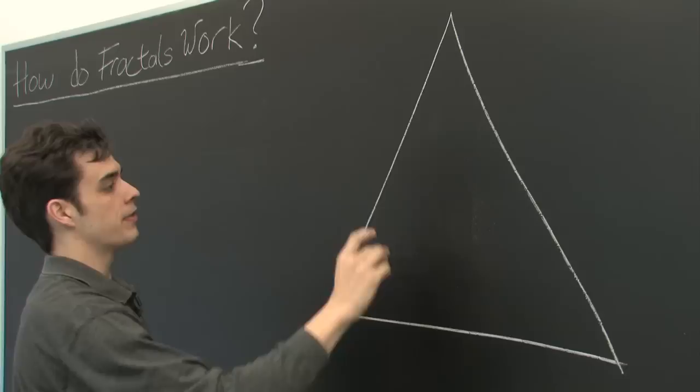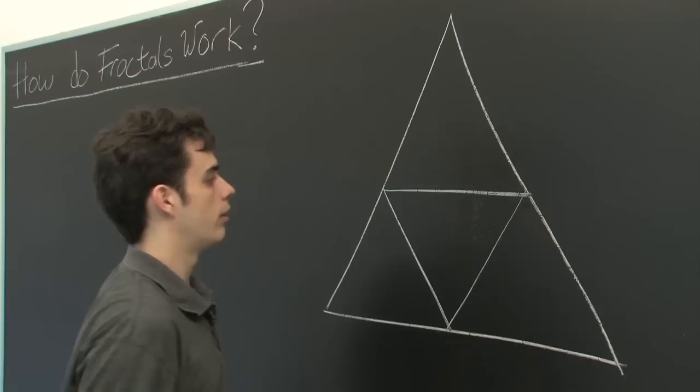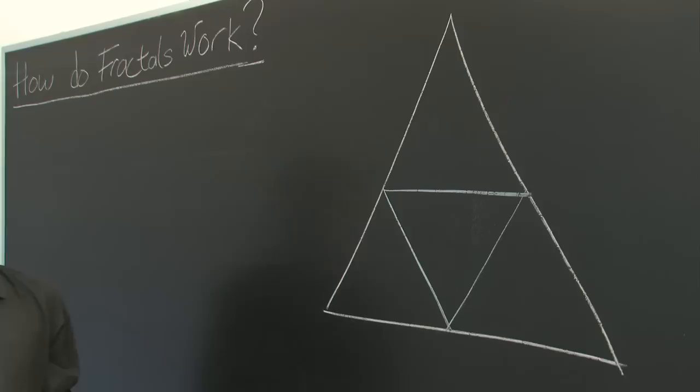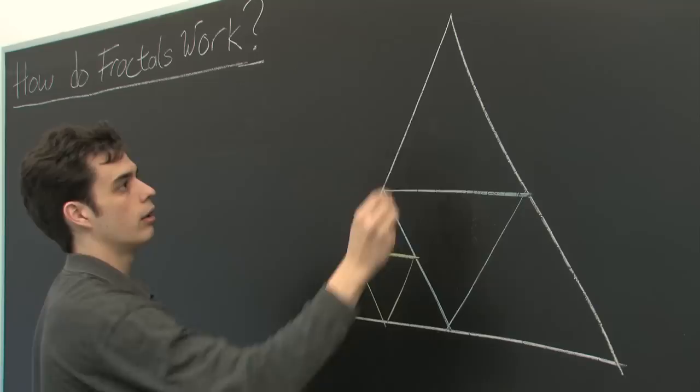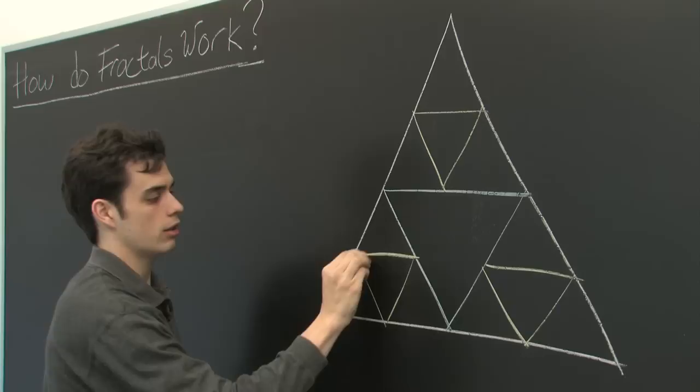Or another way of thinking about it is you take the midpoint of each of the edges and connect them, so you get three more triangles. Then from here, you simply repeat the process: one, two, three, and we'll shade these in.